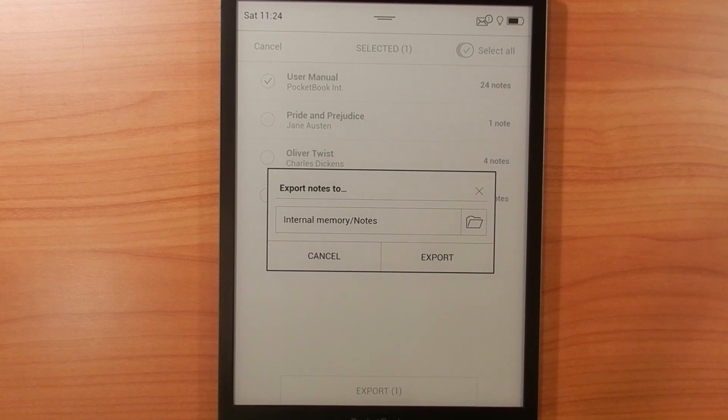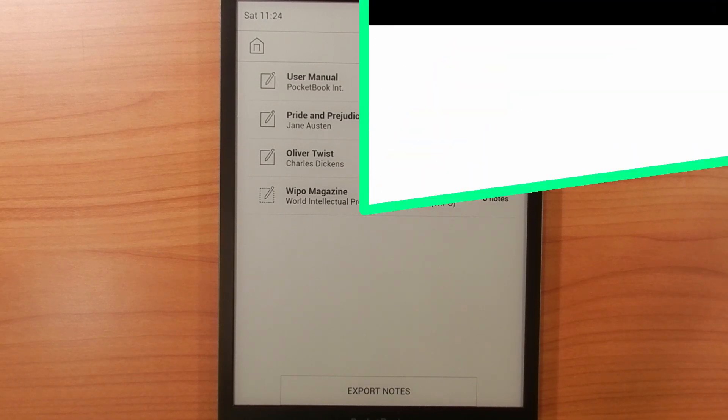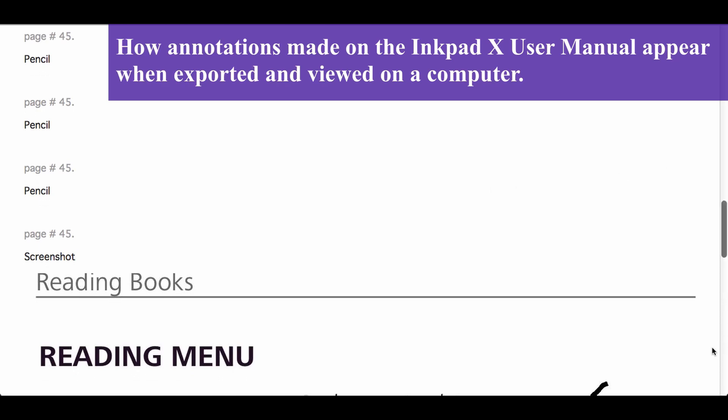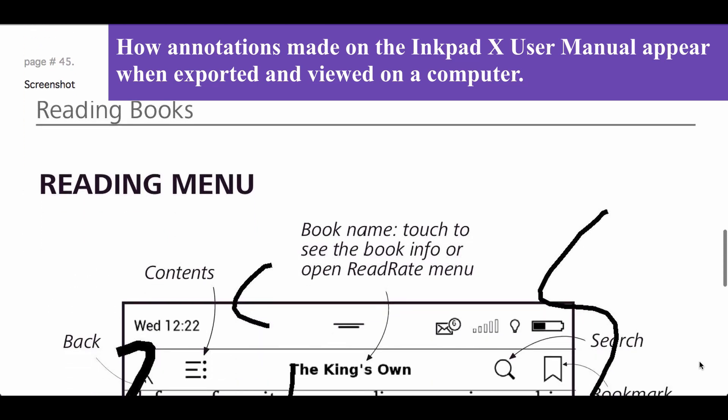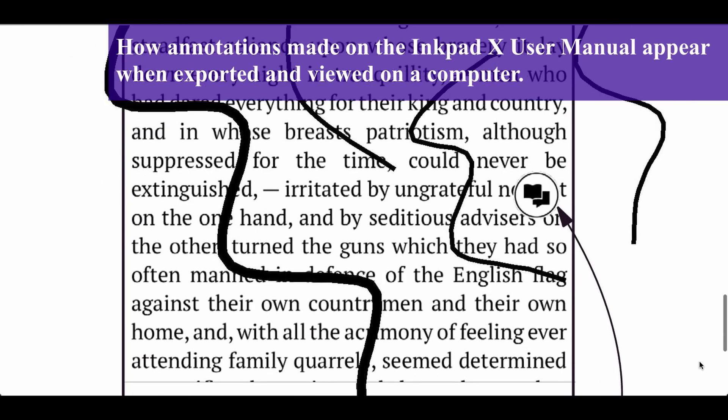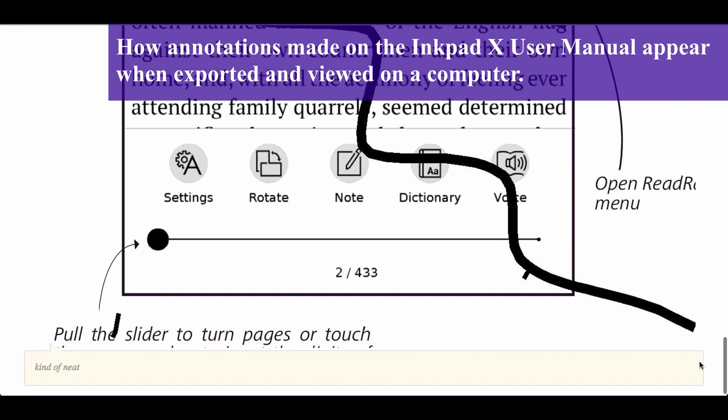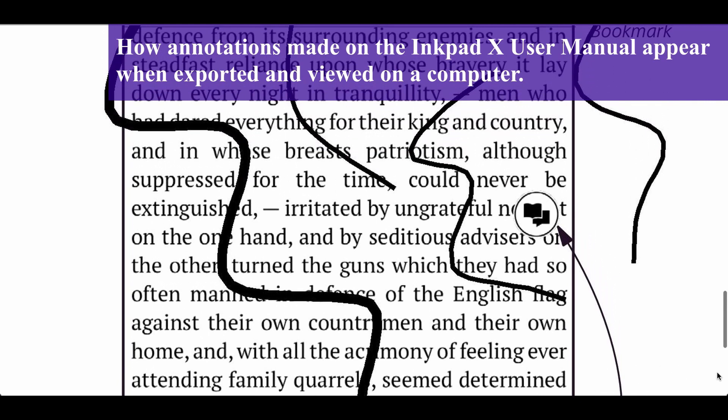When you plug the InkPad X into a computer, you can access the exported file by going to the Notes folder, or whichever folder you select to save it to on the device. Bizarrely, the InkPad X exports your notes to an HTML file. I really can't fathom the logic behind this, and I have to think that this was either the product of lazy programming, or it was just simply a mistake on Pocketbook's part. I mean, why not export an actual separate copy of the PDF with the markups and annotations as another PDF file? That would be a whole heck of a lot more useful to most users.